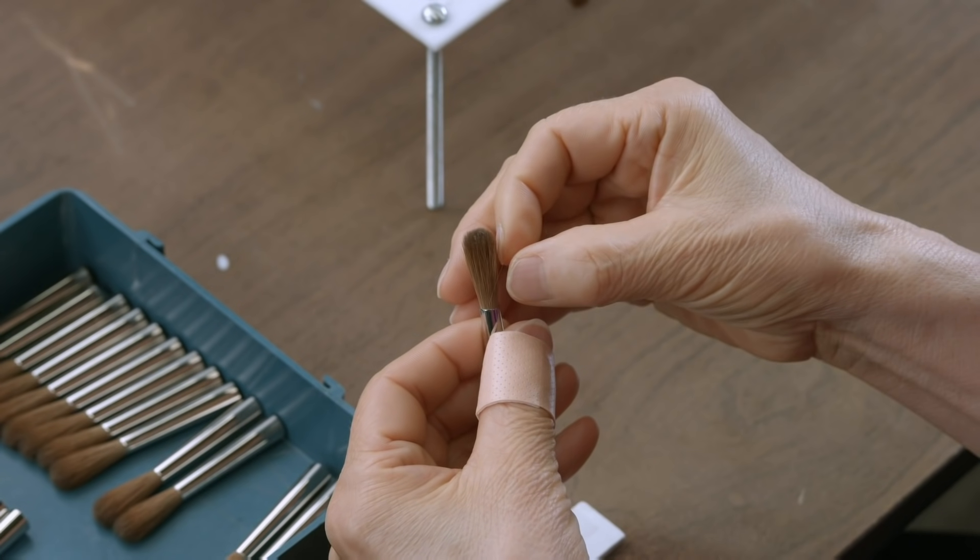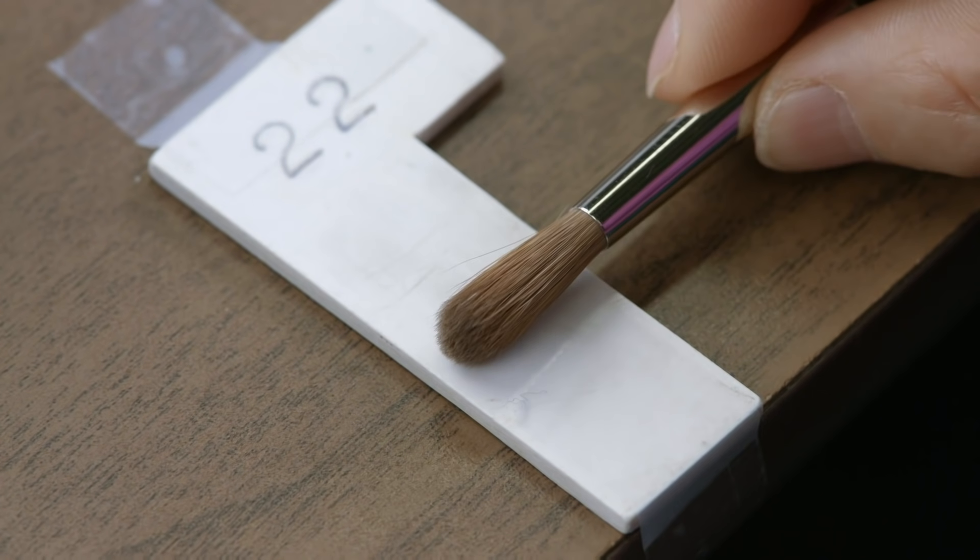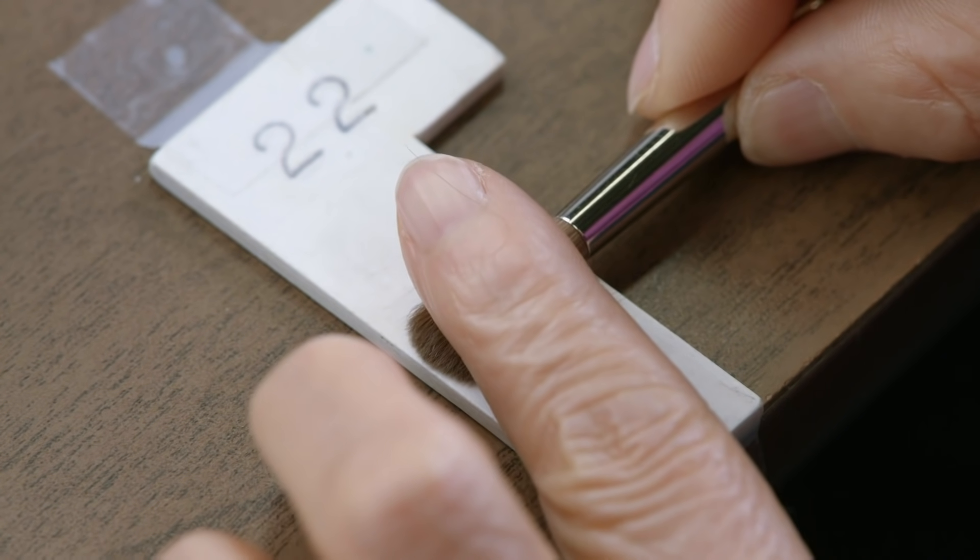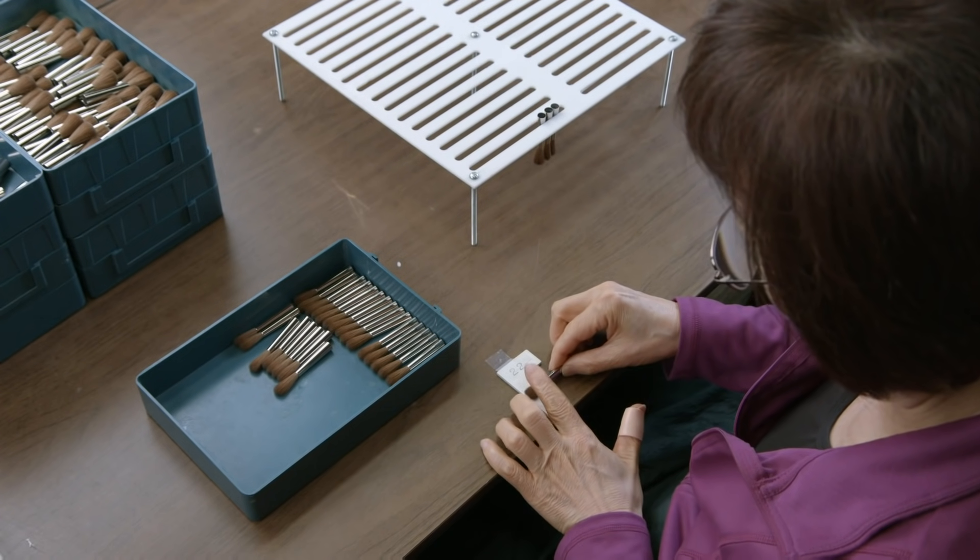After removing any stray hairs, the end of the ferrule is set against the edge of a 22mm template. The hairs are then either pulled out or pushed in until their tips align with the other edge of the template.